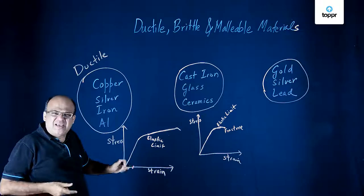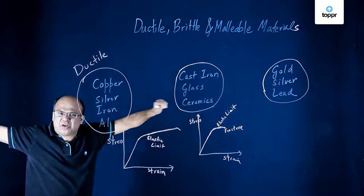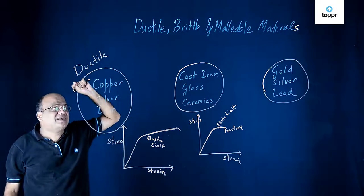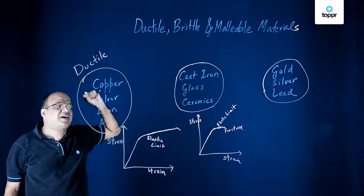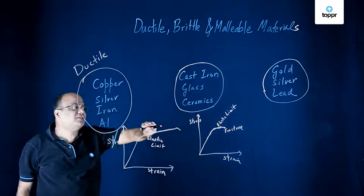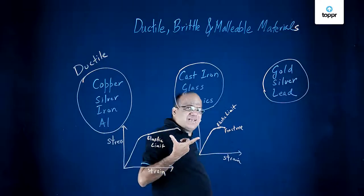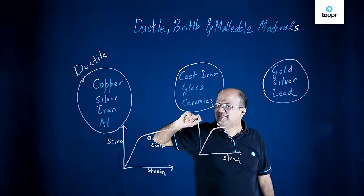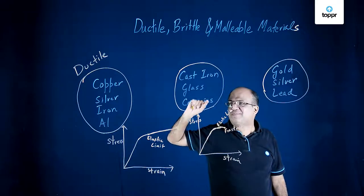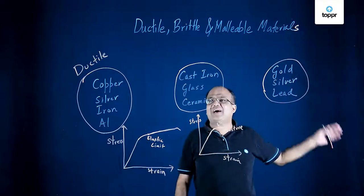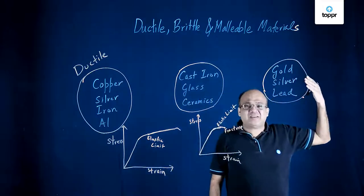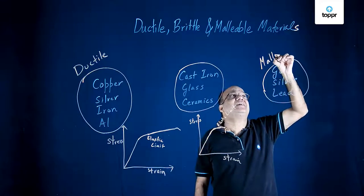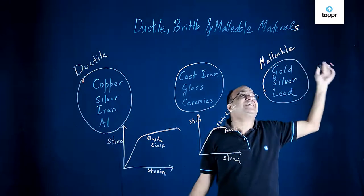First, ductile materials can be drawn into thin wires. Examples are copper, silver, iron, and aluminium. They have a large range of plastic extensions. Brittle materials break as soon as the elastic limit is exceeded — they cannot be drawn into thin wires. Examples are cast iron, glass, and ceramics. Some materials can be beaten down into thin sheets — those are known as malleable materials. Examples are gold, silver, and lead.